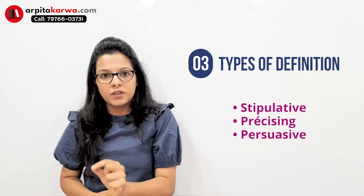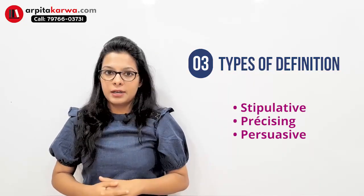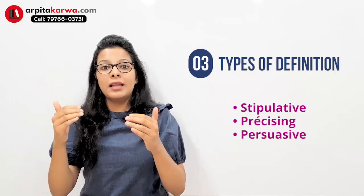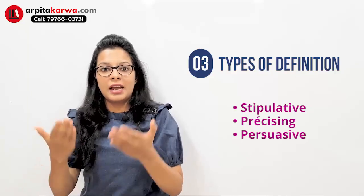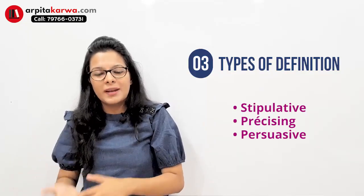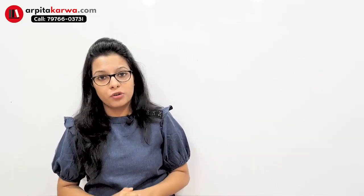These are some important kinds of definitions. In the exam, they might ask you what is a persuasive definition and give you four options to decide which is correct. Or they will give you a definition and ask which kind it is — whether it is stipulative, precising, or persuasive. After looking at the theoretical section, it's time to look at the practical portion of logical reasoning.